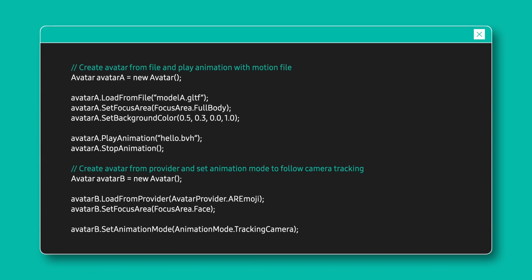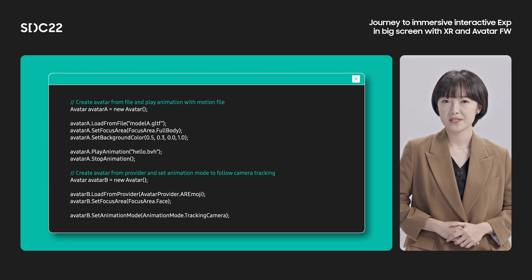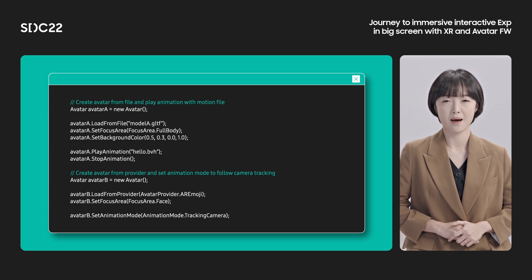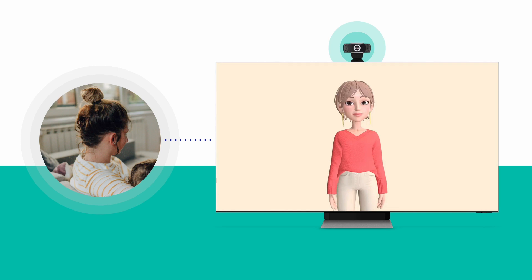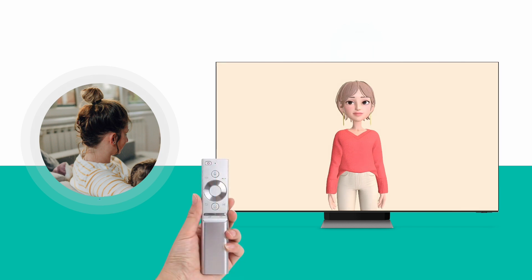Avatar Framework allows application developers to easily load and display avatars without having background knowledge in 3D graphics. The application developers can use our high-level API to load and display the avatar in less than 10 lines of code. What can you do with your customized avatar in these applications? First, you can play predefined animations. But with the camera and our AI technology, use cases can be broadened even more. Your avatar can follow your facial expressions spotted on the camera connected to your TV. And even without the camera, your avatar can analyze your emotions from your voice, generating new lip motions and facial expressions accordingly.